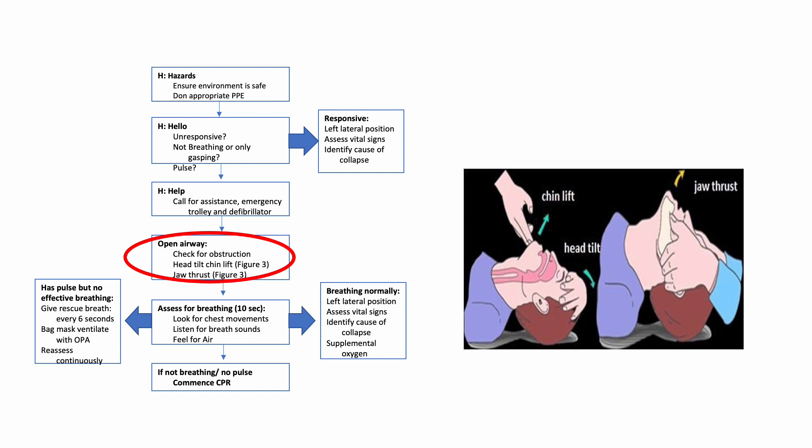You can perform an airway manoeuvre to open the airway as depicted in the diagram: a head tilt chin lift — place one hand on the forehead and lift the chin up — or a jaw thrust, putting your fingers at the angle of the jaw and lifting it forward. Assess for breathing. If breathing normally, put in the left lateral position, assess vitals, identify the cause, and give supplemental oxygen.